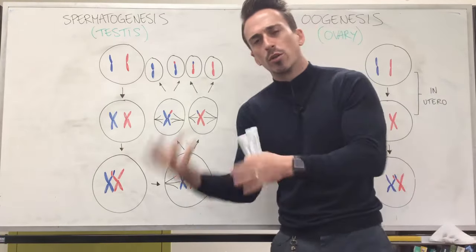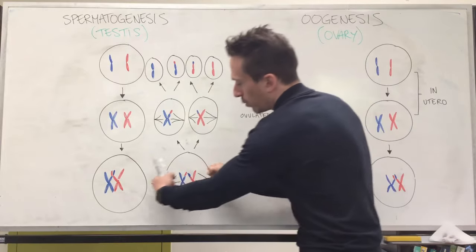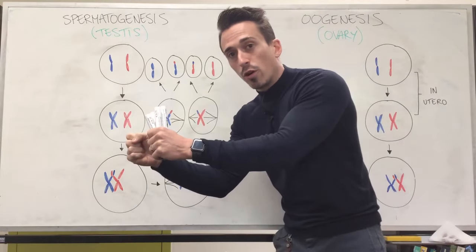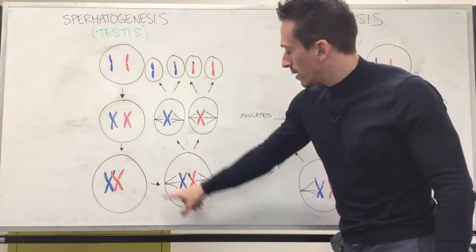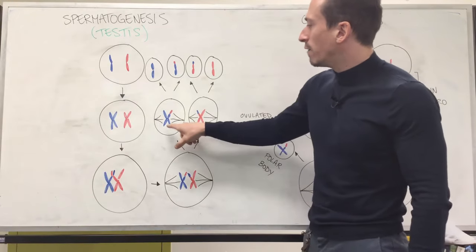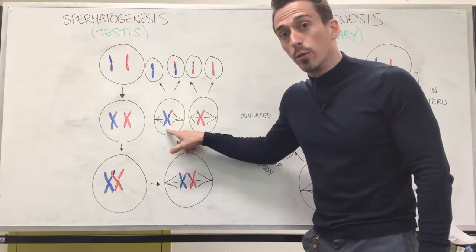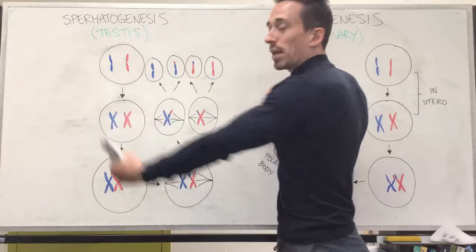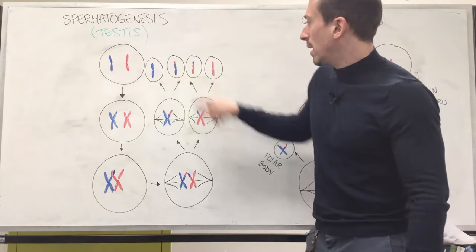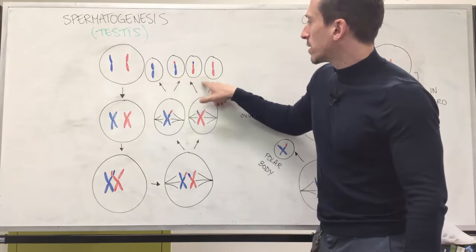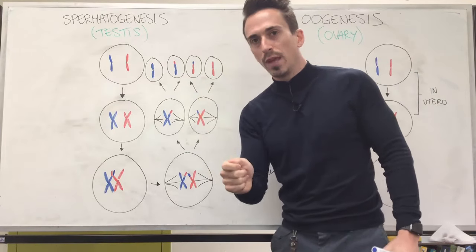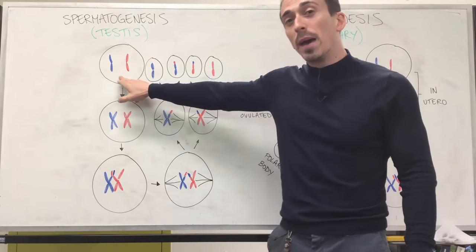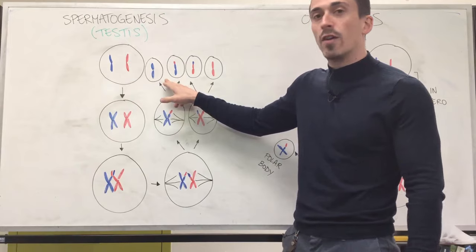Now that they've swapped the genetic material over — mixed and matched — then they get pulled apart. There are these little guy wires that come out and attach to the chromosomes and then split them. This one cell splits into two cells that now have a single chromosome that's doubled up, one from mum and one from dad, with some swapped-over genetic material. Then this gets pulled apart again, and we end up with four individual cells that contain a single chromosome.